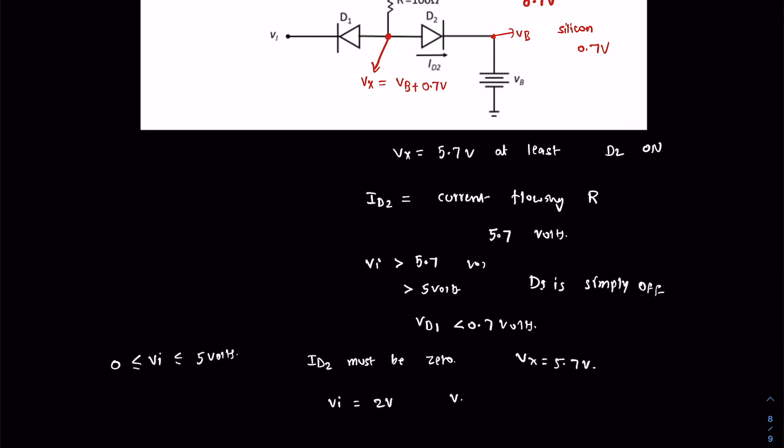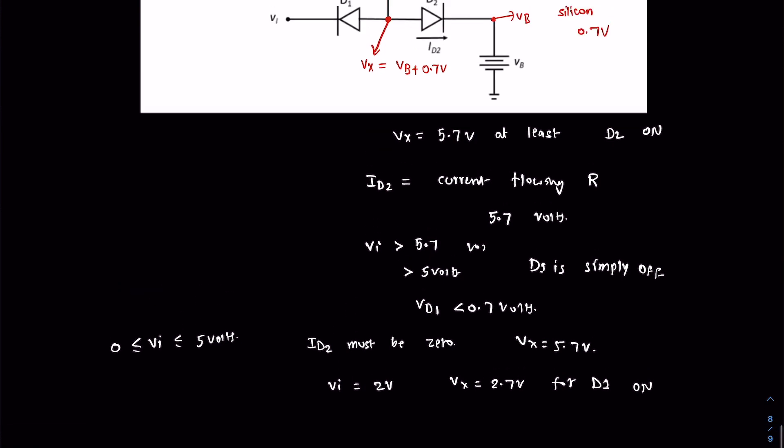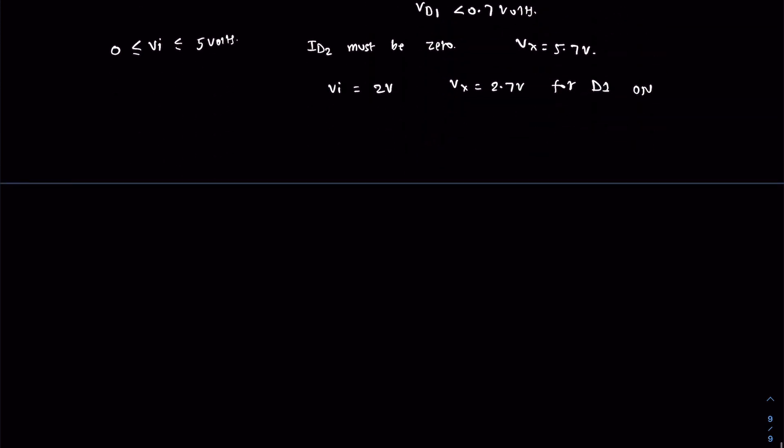Then VX must be 2.7 volts for D1 to be on. So VX always wants to take the lowest possible voltage only.